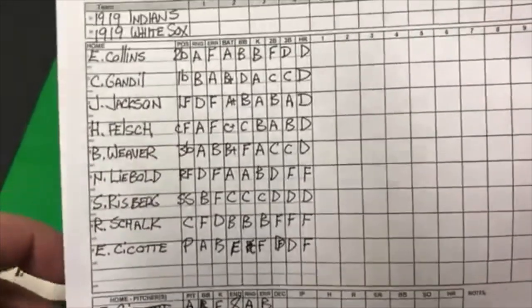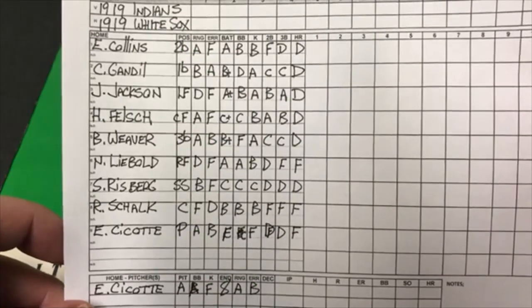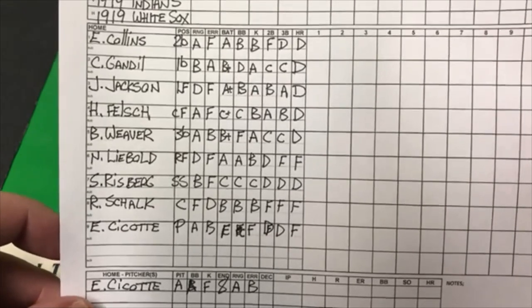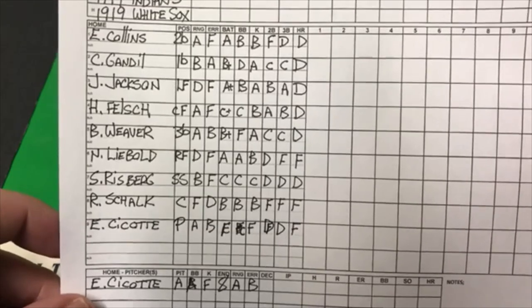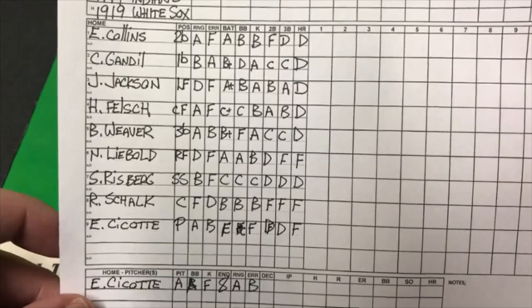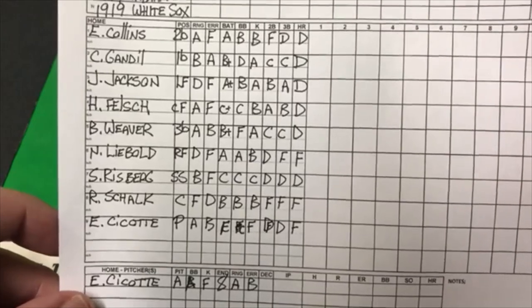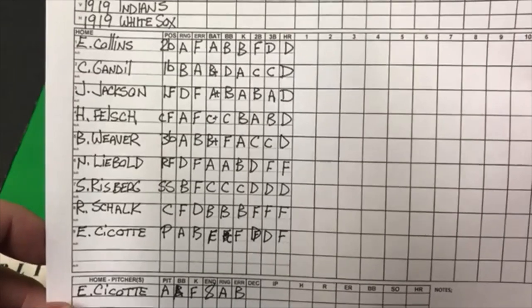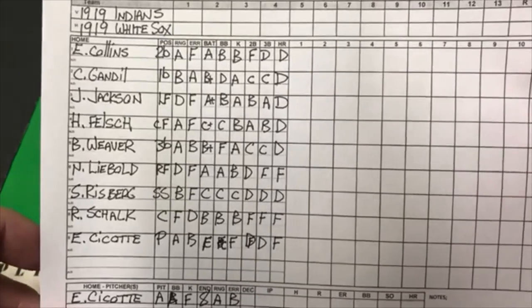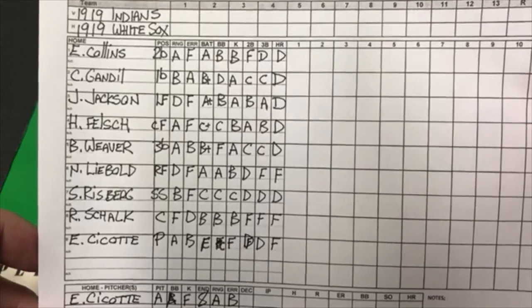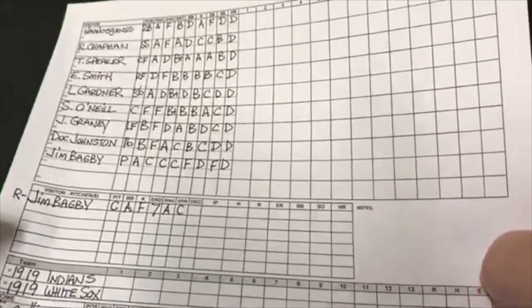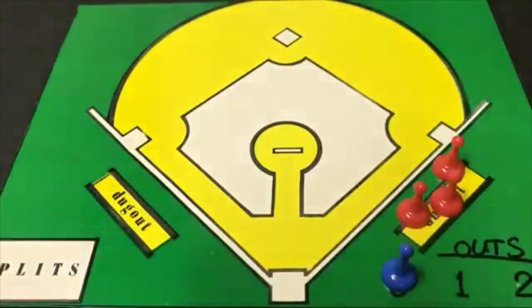For the White Sox, they're going to have Eddie Collins at second base, Chick Gandel at first, Shoeless Joe Jackson in left field, Happy Felsch in center, Buck Weaver at third, Nemo Leibold in right, Risberg at shortstop, Ray Schultz catching, and Eddie Seacott — the knuckleballer — as the pitcher. Something you'll notice is that almost everybody's fielding for errors is an F or a D. There are occasional Bs and As, but mostly F and D — that's how it was back in the day. Everybody made errors.